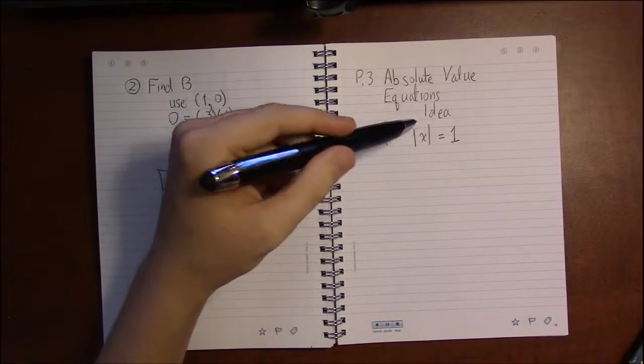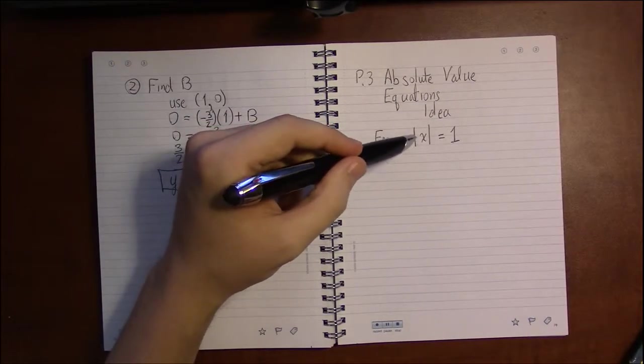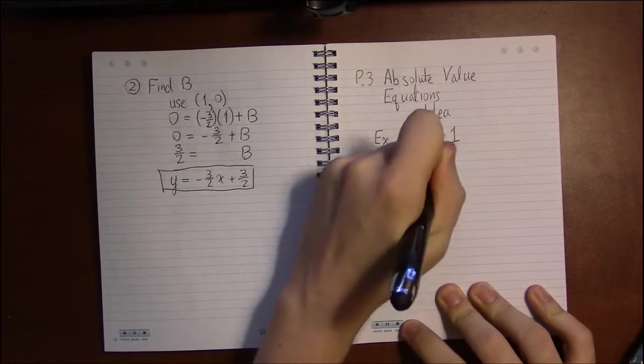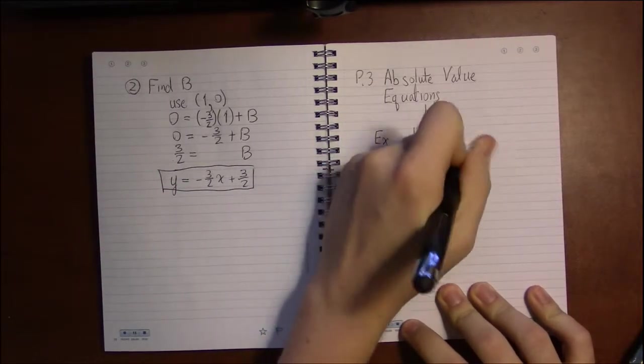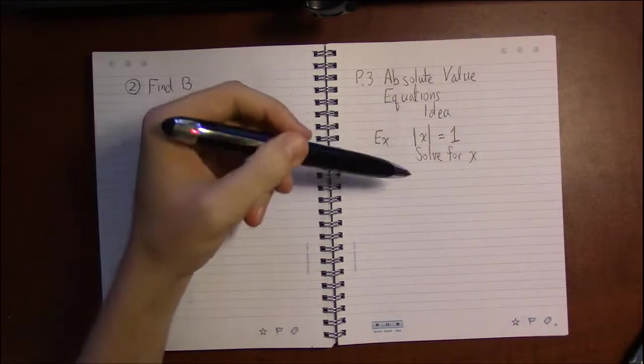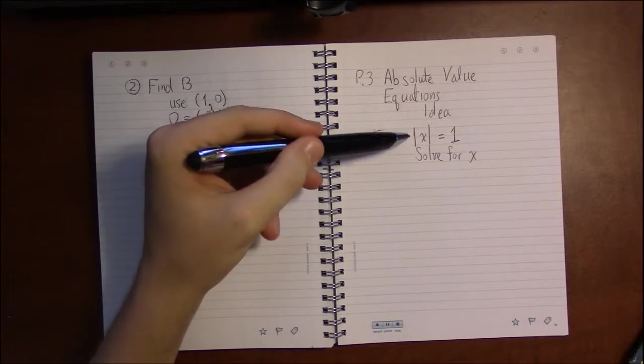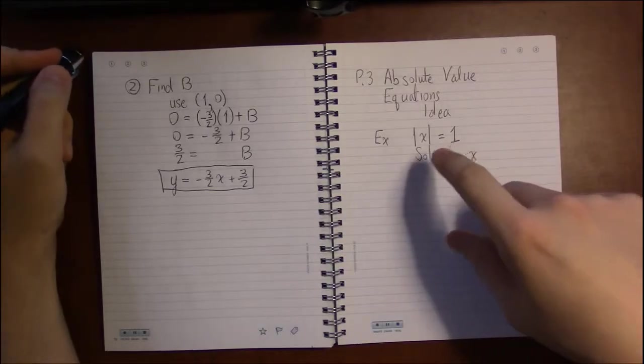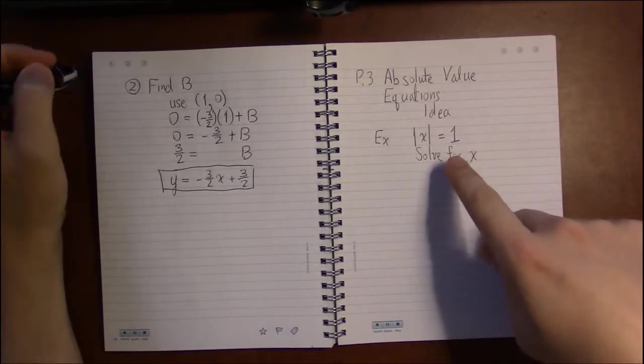If you take a look at this, we're saying the absolute value of x equals 1, and our goal is to solve for x. So recall what absolute value does. Absolute value just strips away the sign of x.